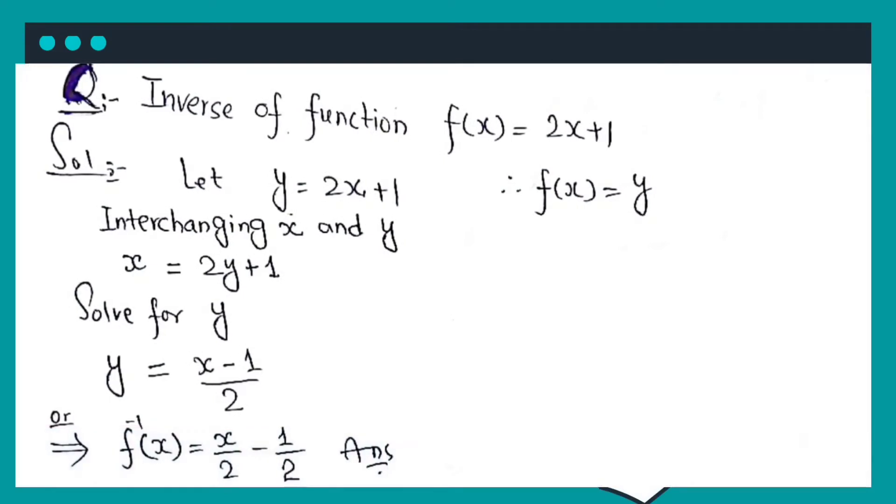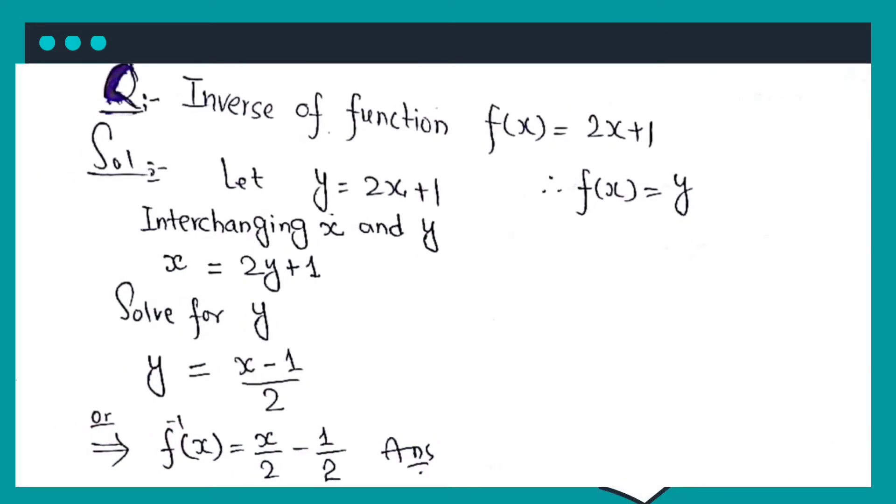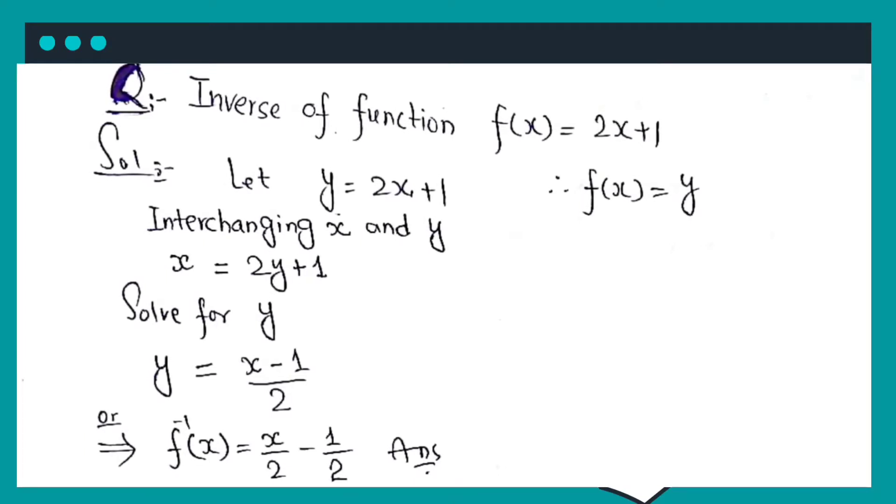Question number 1. Inverse of the function f of x equals 2x plus 1. After interchanging x and y, we get f inverse x equals x by 2 minus 1 by 2.